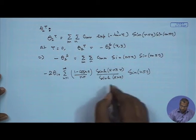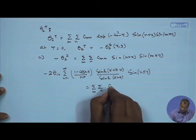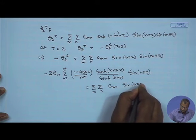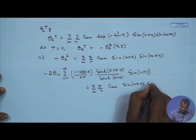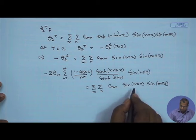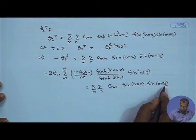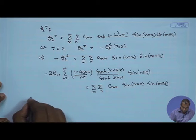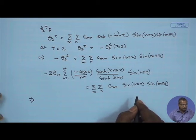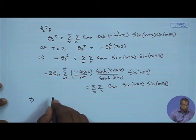That steady state solution equals the double summation over m and n of c_mn sin(nπx) sin(mπy). We multiply both sides by sin(mπx) sin(nπy) dx dy and integrate. After applying orthogonality, only one term survives on the right hand side.